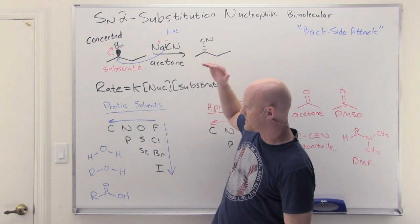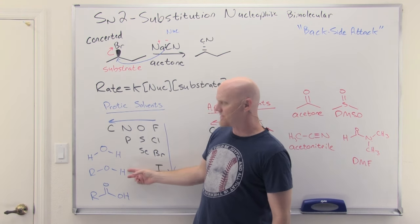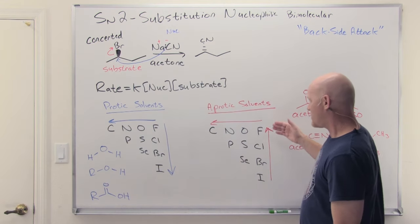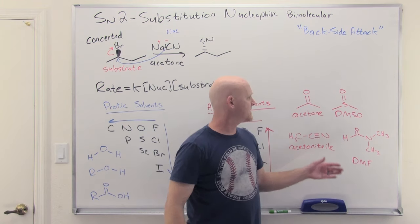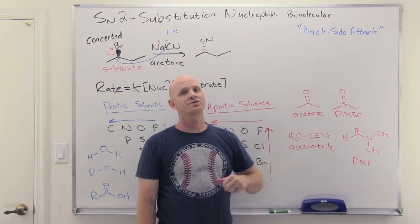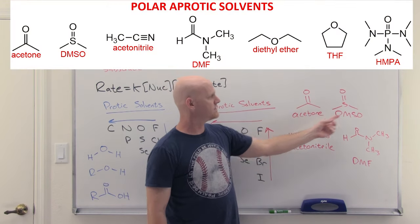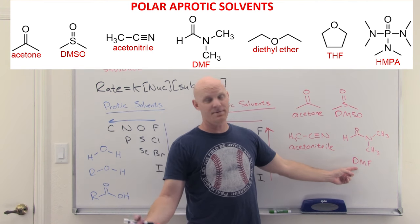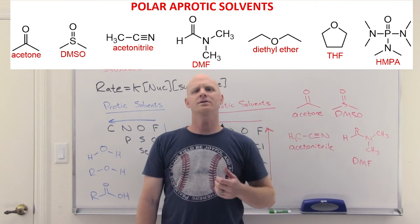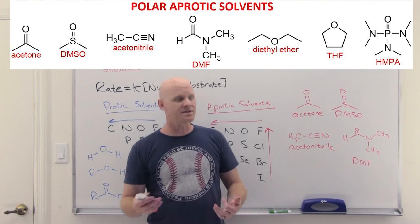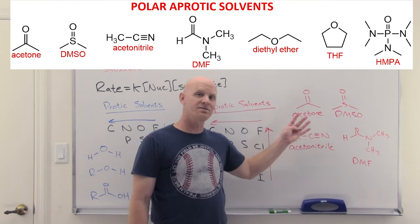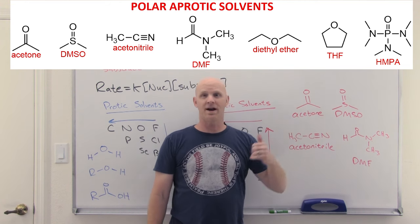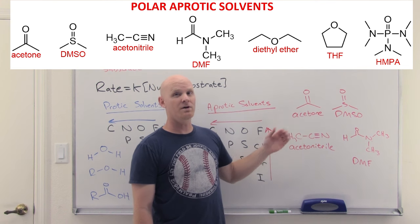Common protic solvents are water, alcohols, and occasionally carboxylic acids. The four most common polar aprotic solvents are acetone, dimethyl sulfoxide (DMSO), acetonitrile, and dimethylformamide (DMF). You may also encounter diethyl ether, THF (tetrahydrofuran), or HMPA depending on your textbook. These four — acetone, DMSO, acetonitrile, DMF — are the most universal and well worth memorizing. Seeing an aprotic solvent is typically a signal that you're dealing with an SN2 reaction.